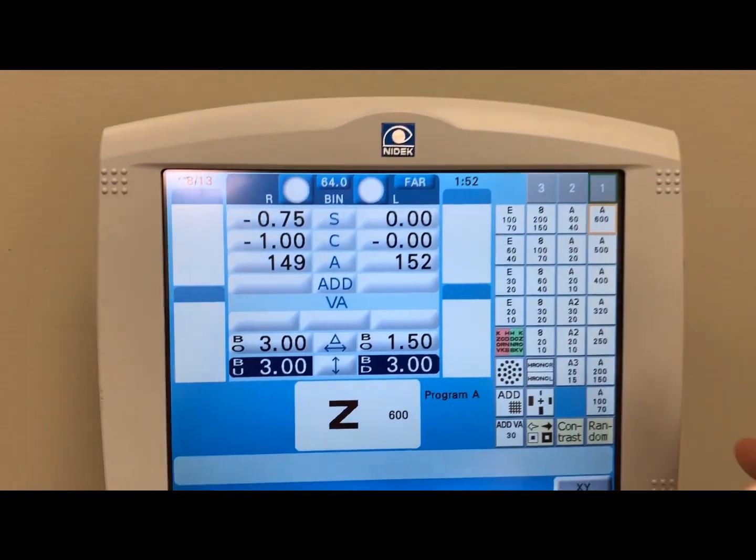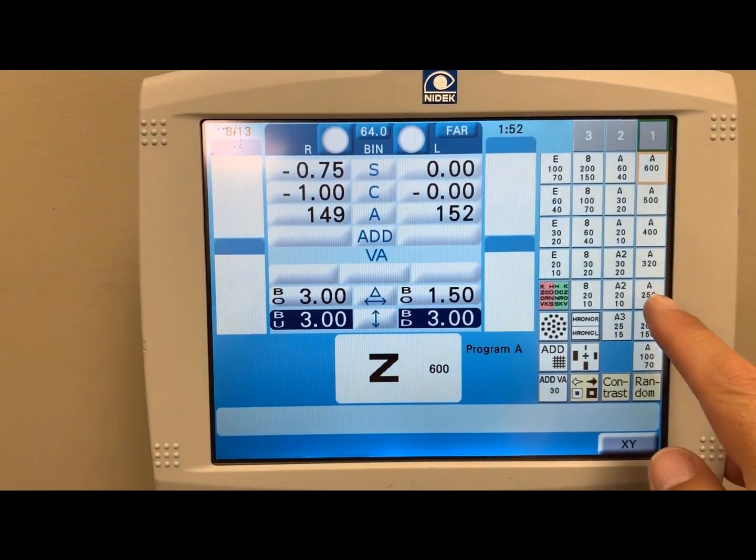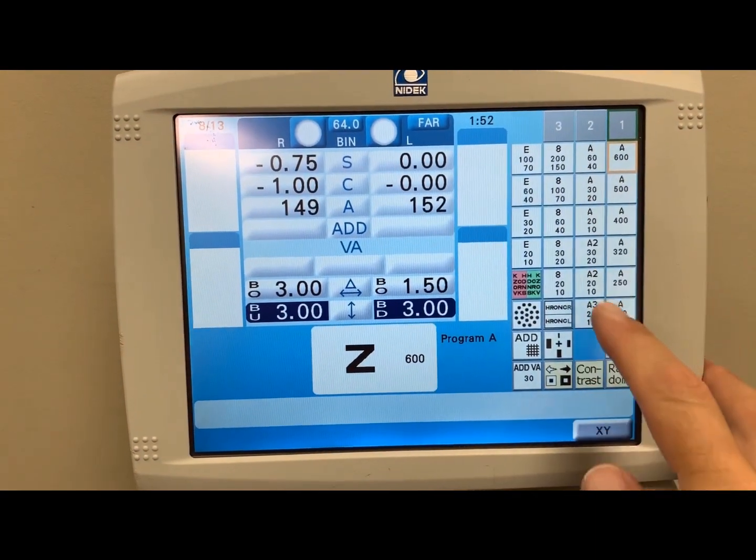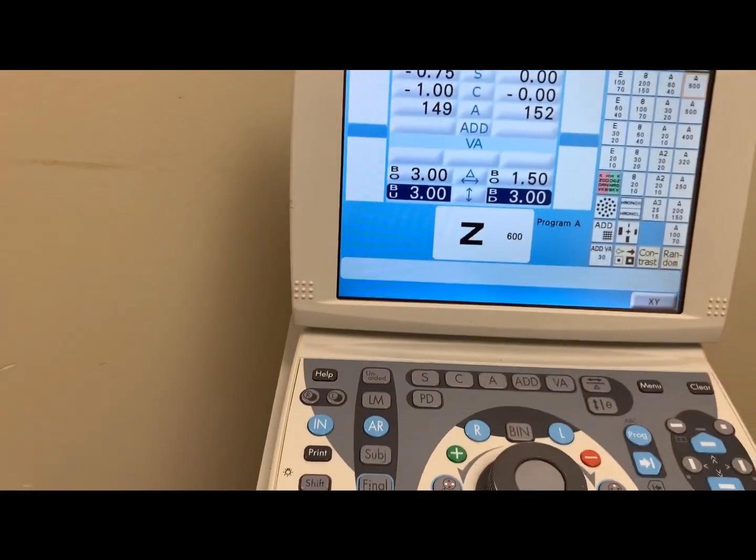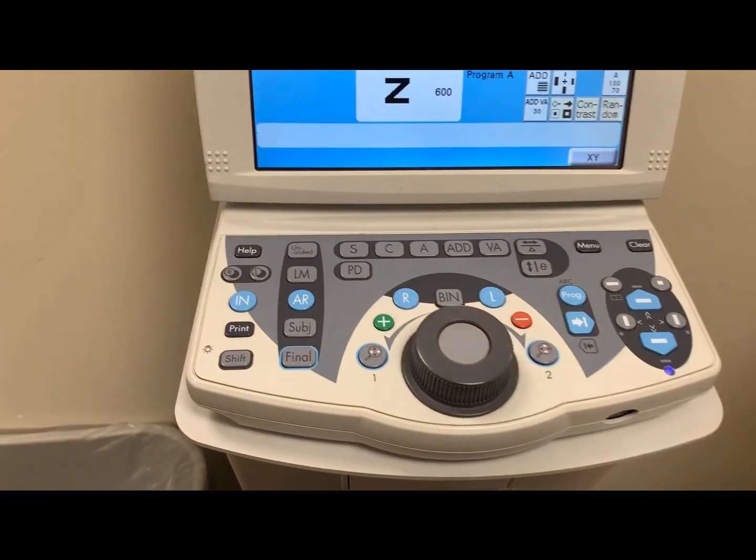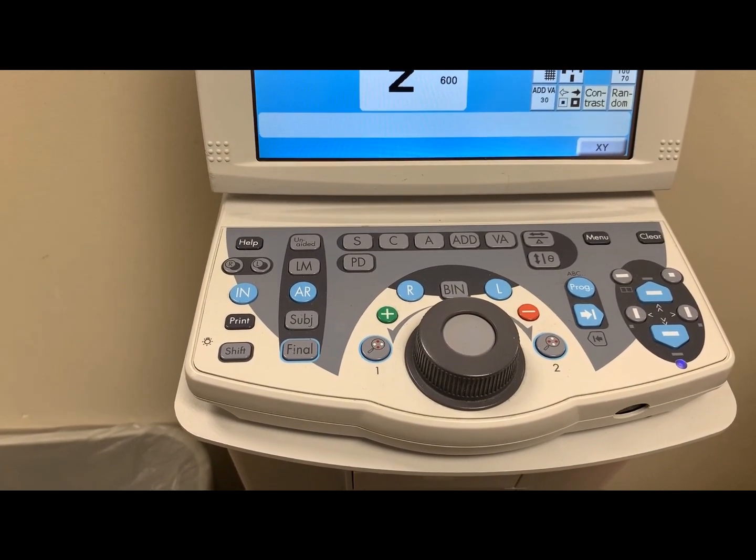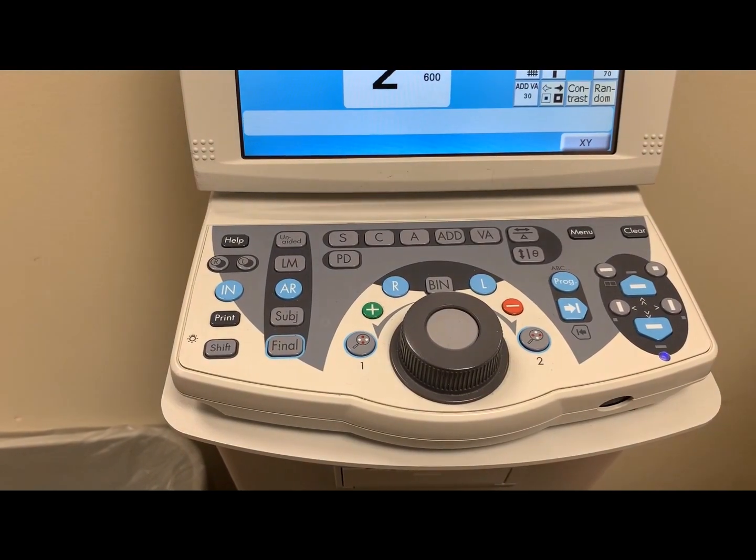Changing the eye chart on this particular instrument will be located here on the side. You can simply select which one you want to change the chart to. And that concludes the very brief tutorial and introduction on the Marco slash NIDEC system.